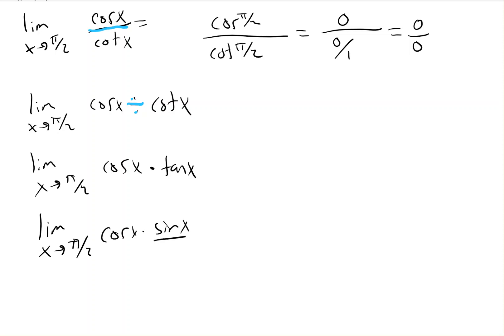Then we need to know the quotient identity. Rewrite tangent as sine over cosine. So now we can use the divide out method.